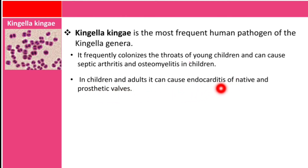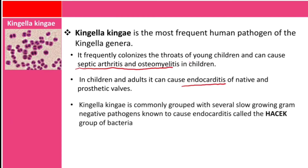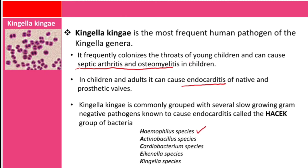Kingella kingae is commonly grouped with several slow-growing gram-negative pathogens known to cause endocarditis, referred to by the mnemonic HACEK: H for Haemophilus species, A for Aggregatibacter, C for Cardiobacterium species, E for Eikenella species, and K for Kingella species. Kingella kingae is rare in MROC examinations so far, but be prepared.